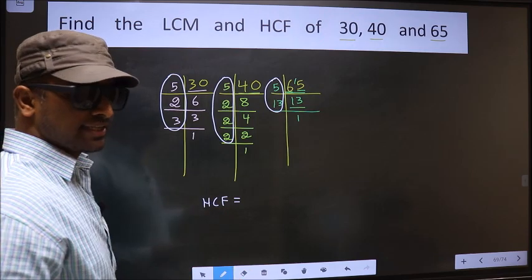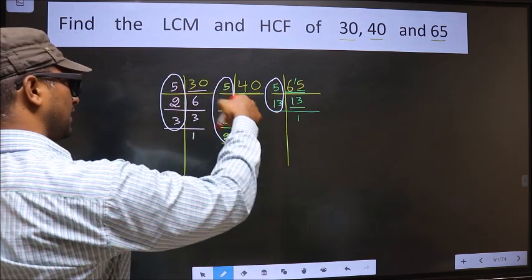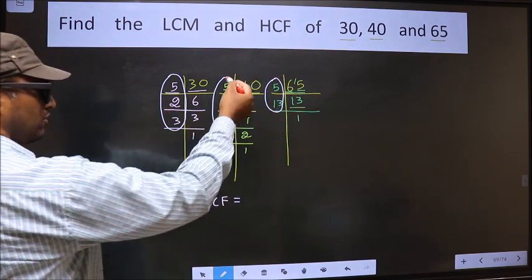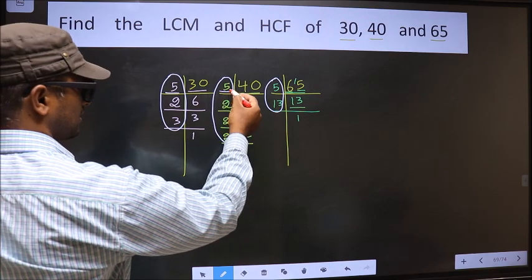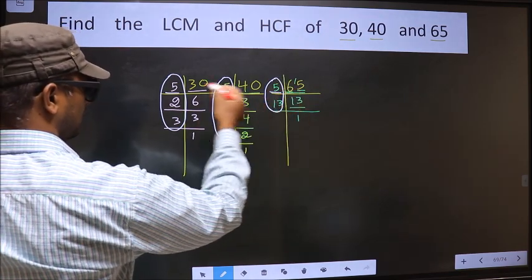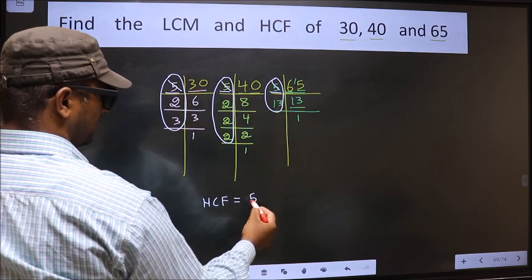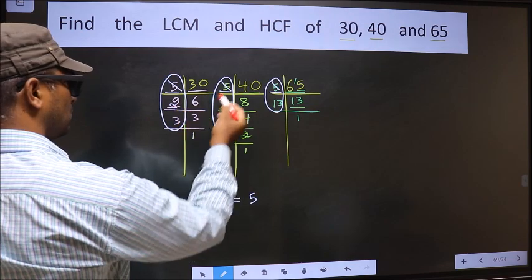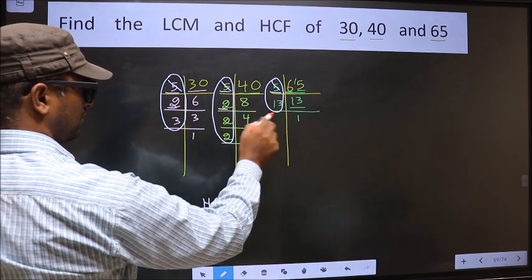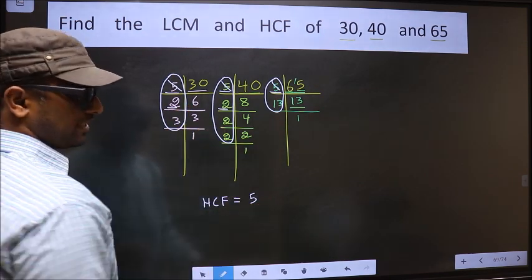So now let us find the numbers which are present here, here and also here. Starting with the number 5. Do we have 5 here? Yes. Go to the next place. Do we have 5 here? Yes. So you cut 5 and write here. Next number 2. Do we have 2 here? Yes. Go to the next place. Do we have 2 here? No. 2 is present in only 2 places, so we cannot write here.